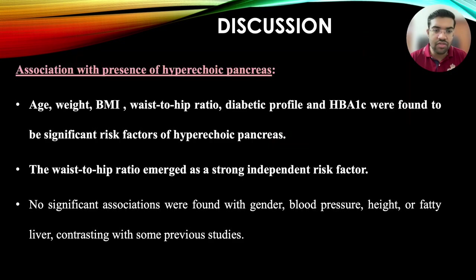Discussion. Association with the presence of hyperechoic pancreas was found for age, weight, BMI, waist-hip ratio, diabetic profile, and HbA1c as significant risk factors. Waist-to-hip ratio emerged as a strong independent risk factor, while no significant association was found with gender, blood pressure, height, or grades of fatty liver.